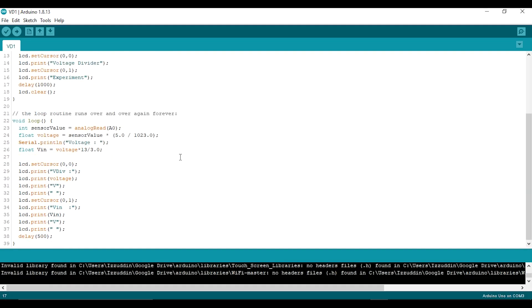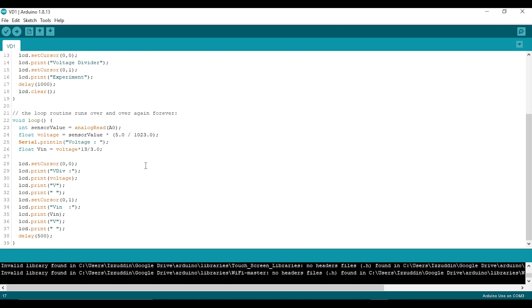Here's the sketch. You can download this sketch, link in the description below. This sketch is actually just read an analog voltage from pin A0. To find the original voltage or the voltage input, you need to multiply the voltage by 13 and divide it by 3. And then I print both values to an LCD.